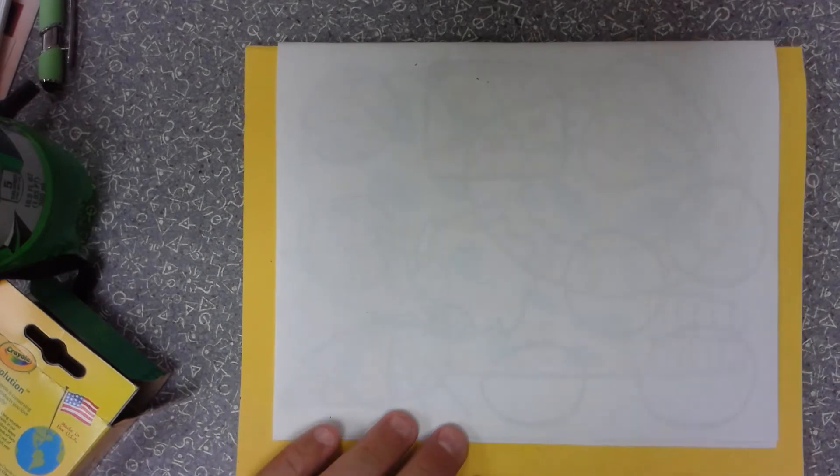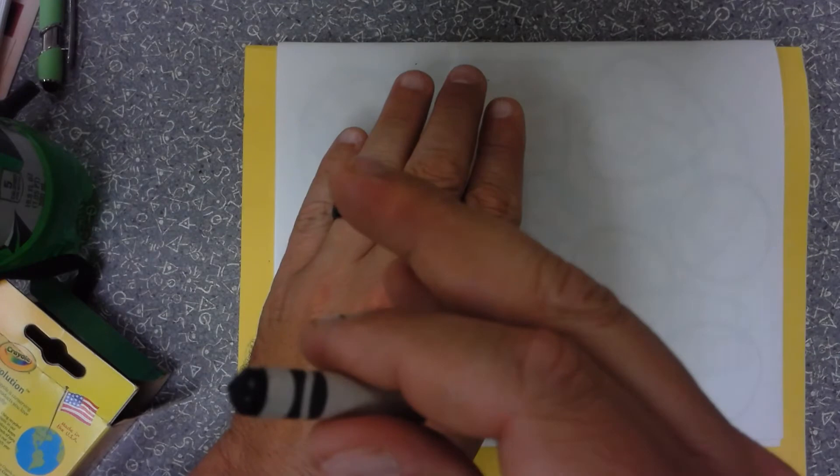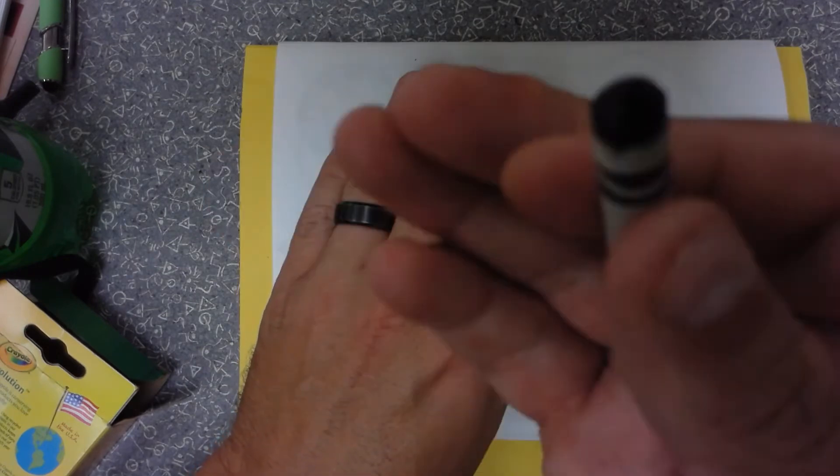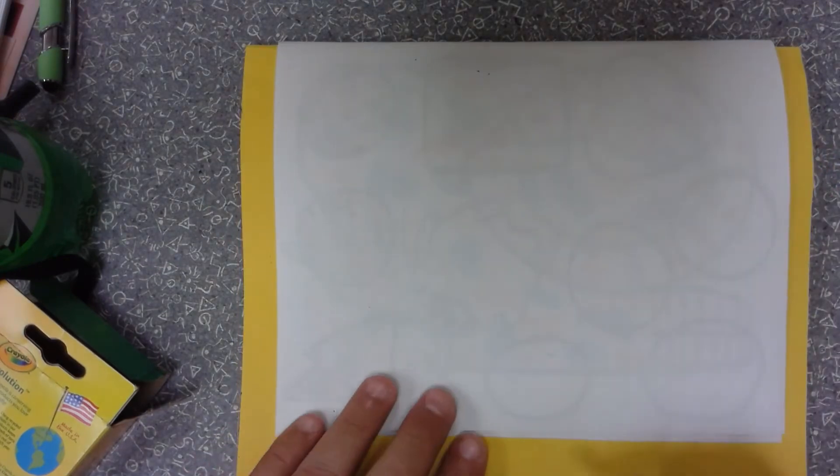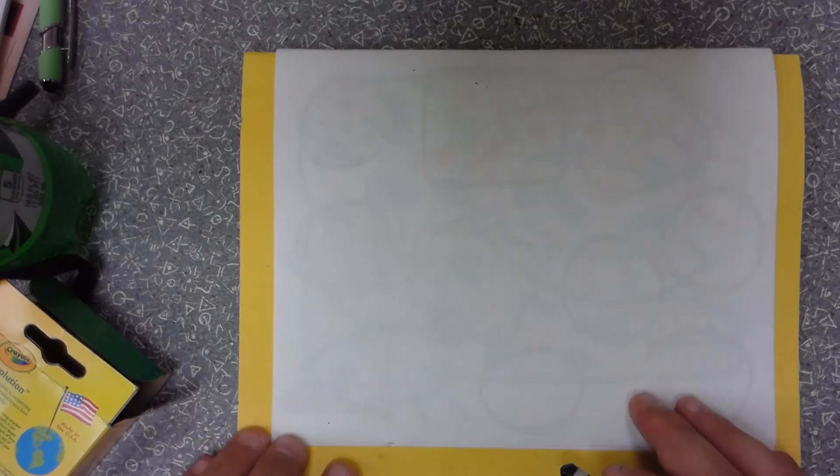Things that are closer look bigger and things that are further away look smaller. We're going to do a landscape today. We'll do the first part together and then you're going to do the rest on your own using your imagination.